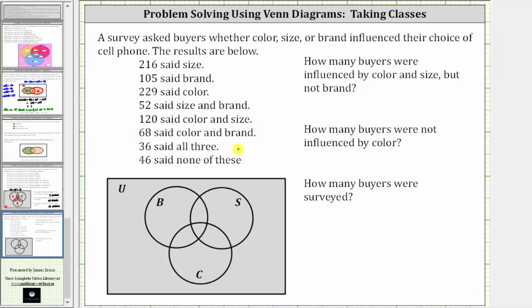We will begin by organizing the information in the Venn diagram below, where set B is the set of buyers influenced by brand, set S is the set of buyers influenced by size, and set C is the set of buyers influenced by color. Once we complete the Venn diagram, we will answer the questions on the right. To create the Venn diagram, we'll start at the bottom and work our way up.